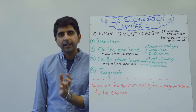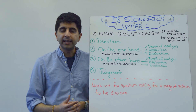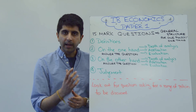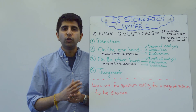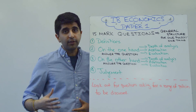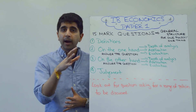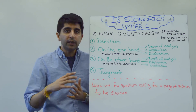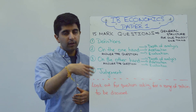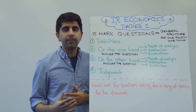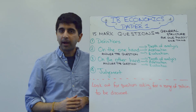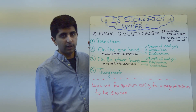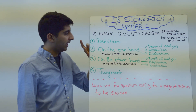You start with your definitions. Define all the key terms in the question and any other key terms that underpin your essay. If you've defined those key terms in part A of the question, i.e., in your 10-marker, you don't need to define them again. Just say, for example, 'market failure is as defined in part A.' That's all you need to say. So don't repeat stuff you've already done in part A.